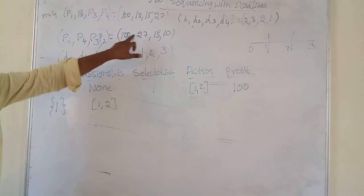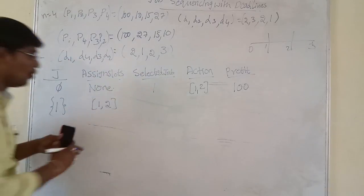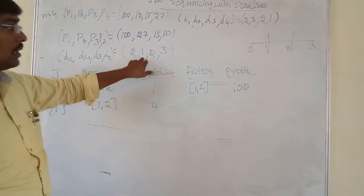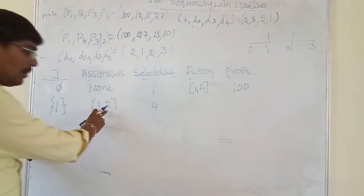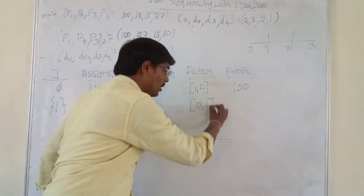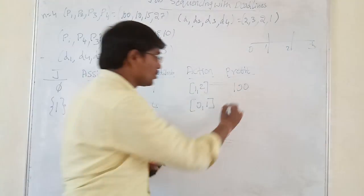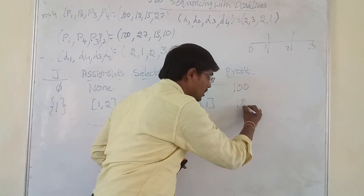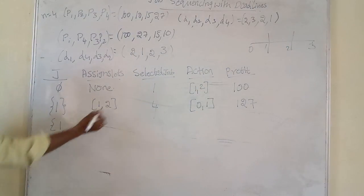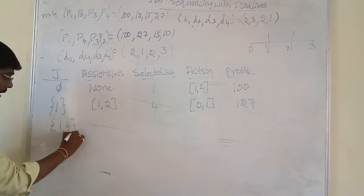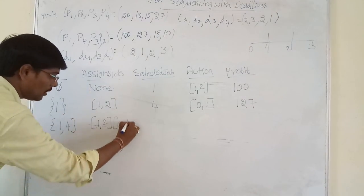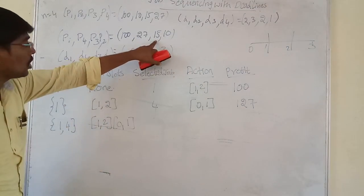Next we select Job 4. The deadline for Job 4 is 1, so slot (0, 1) is free. We simply assign slot (0, 1) and the profit is 27, making the total profit 127. Our solution now contains Jobs 1 and 4, with assigned slots (1, 2) and (0, 1).